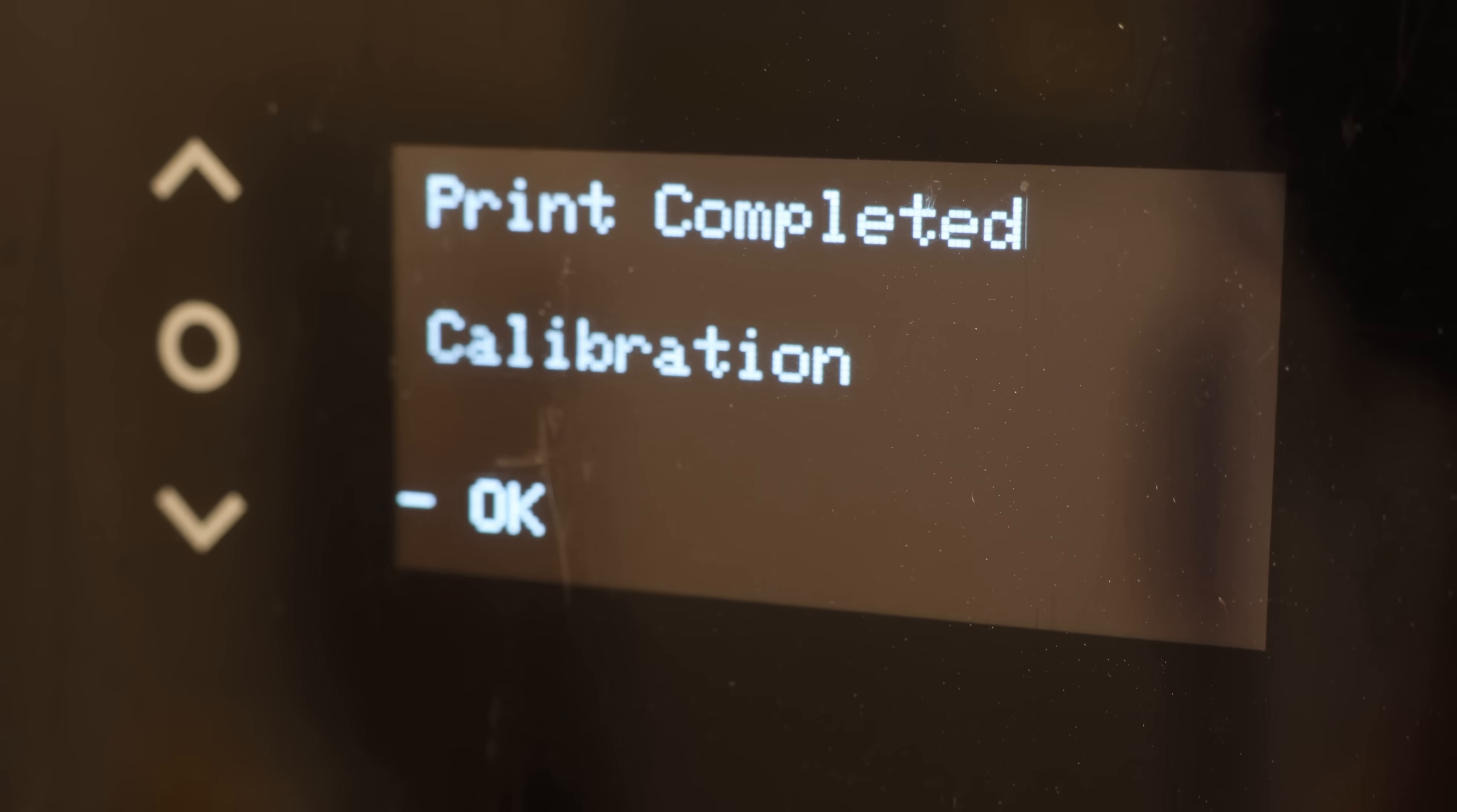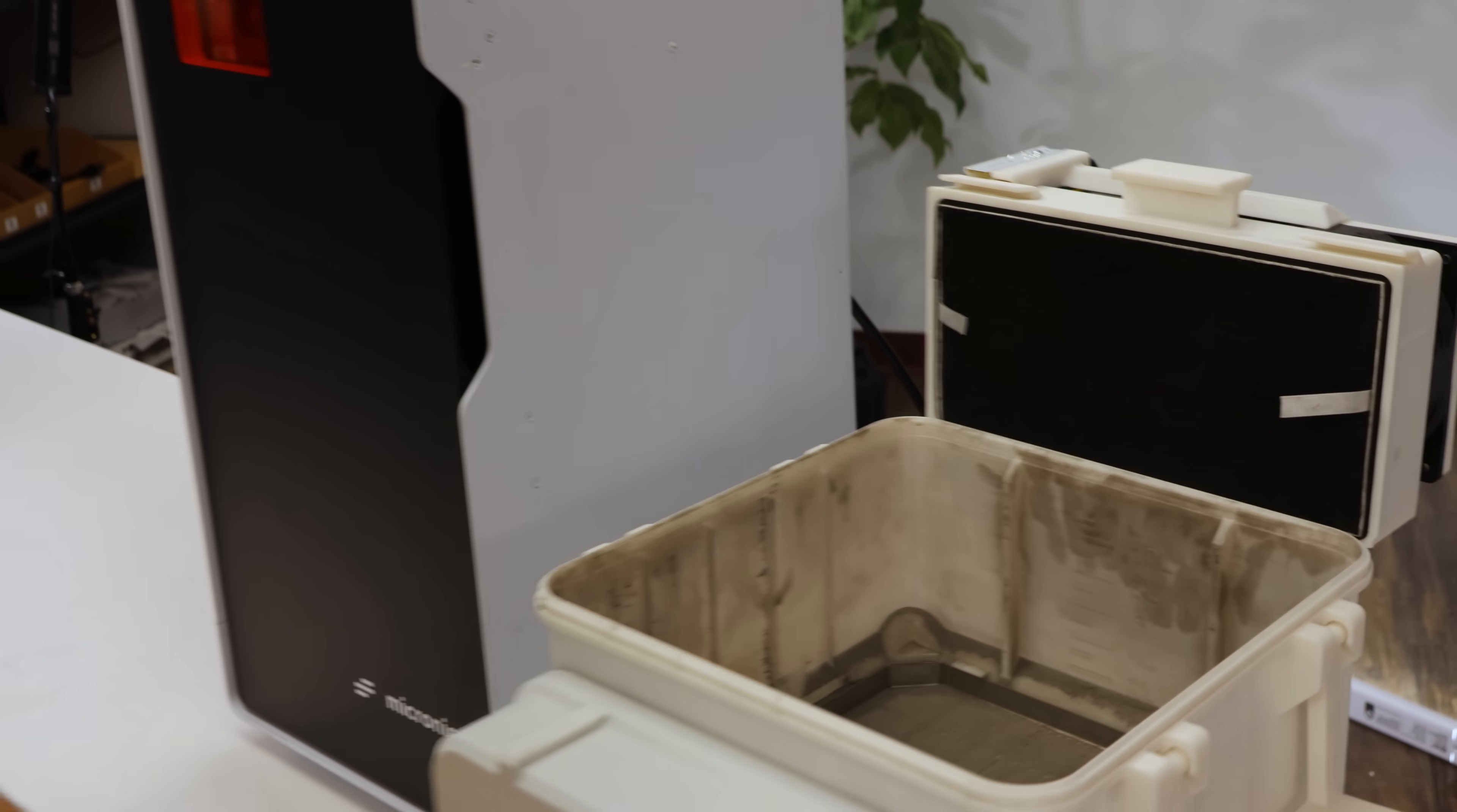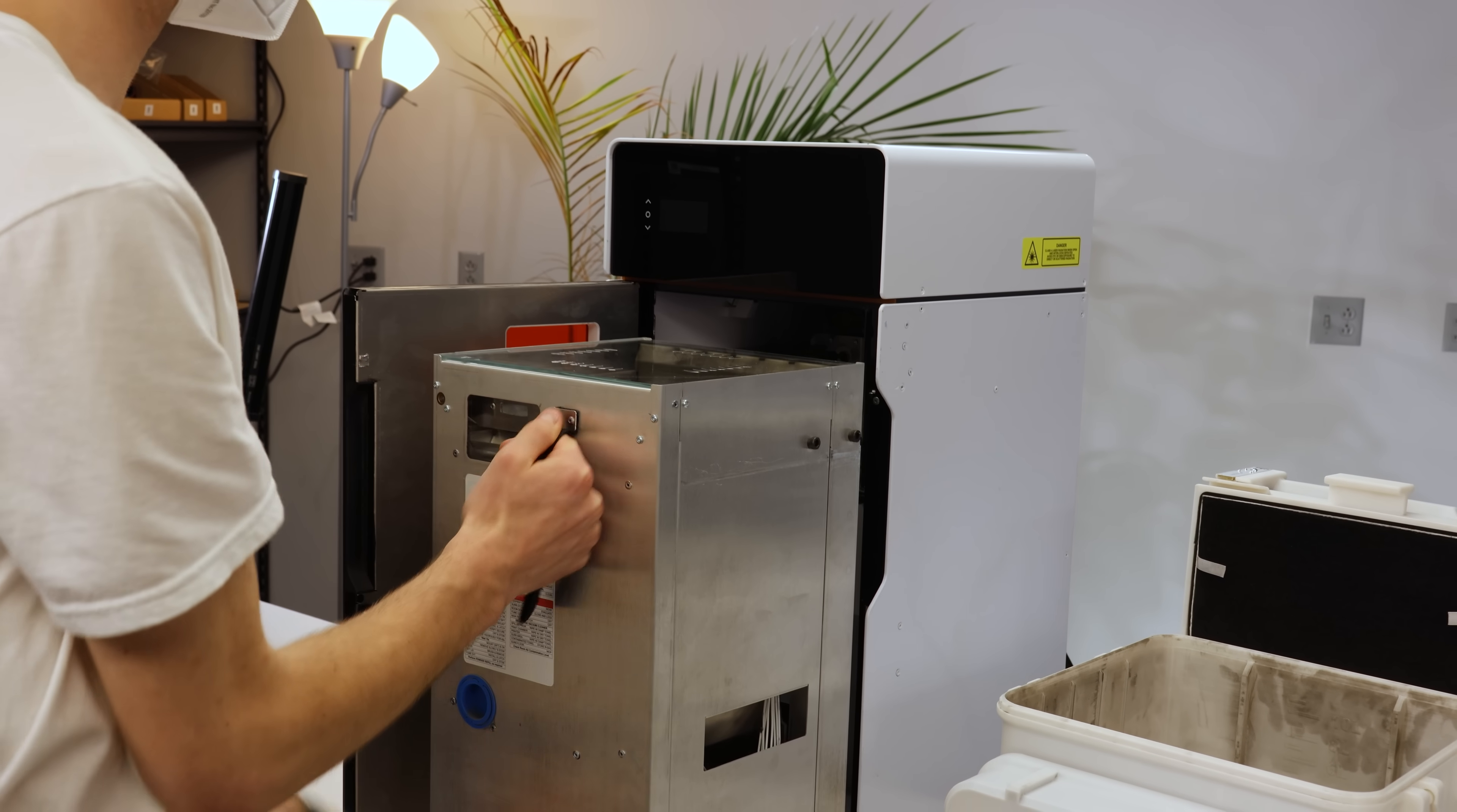An hour later, and our print is done. To get it out, first attach the fume extractor to the bin and turn it on. Then, remove the chamber and set the glass plate aside. They may still be hot.